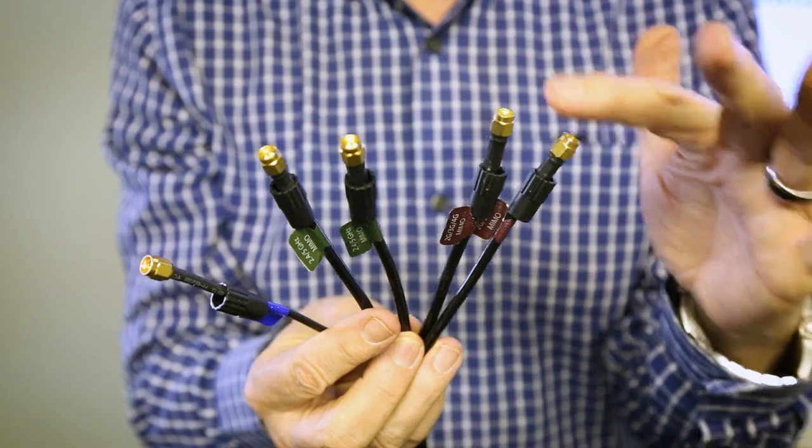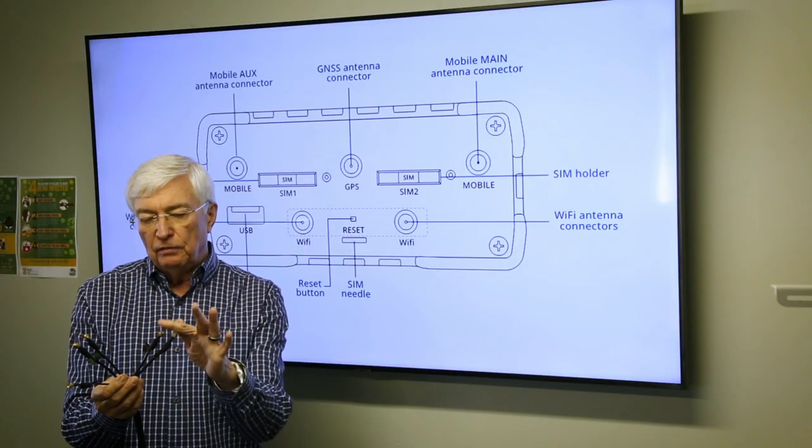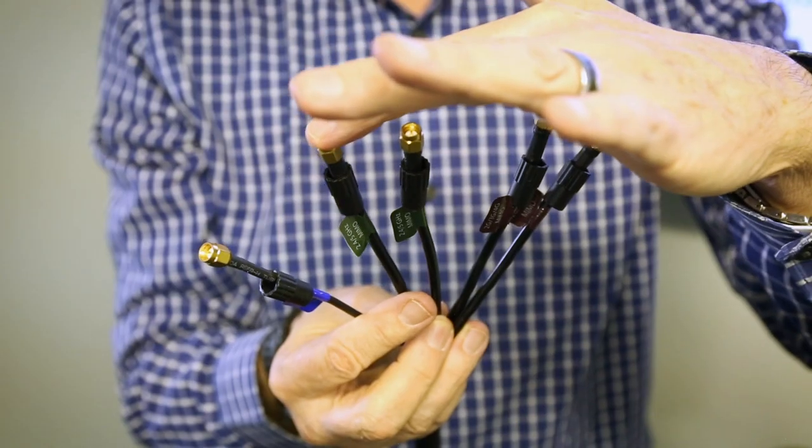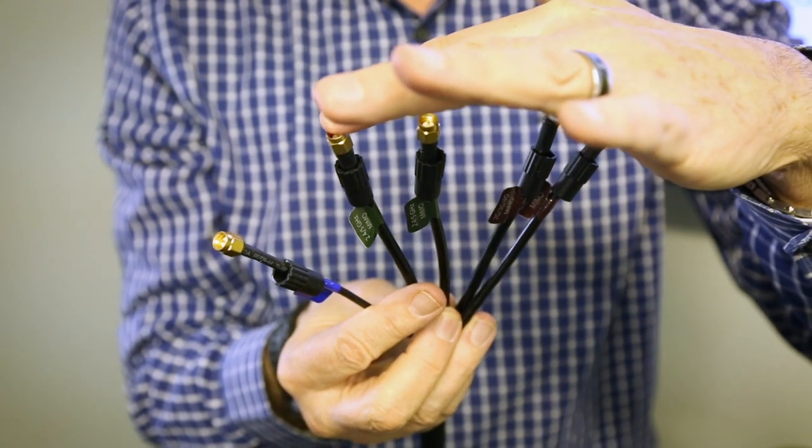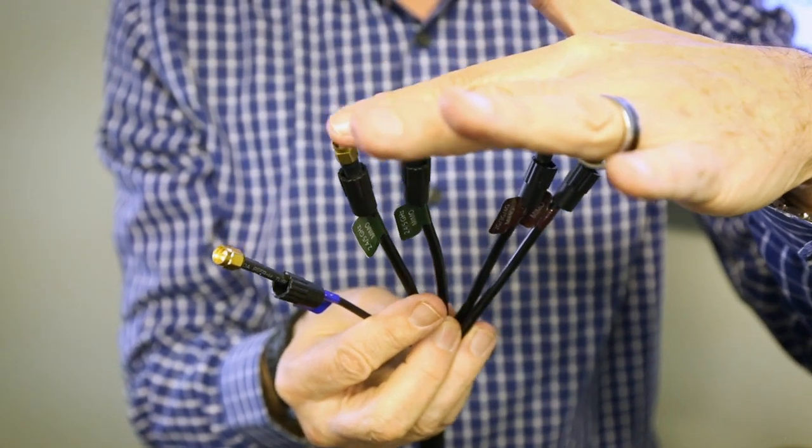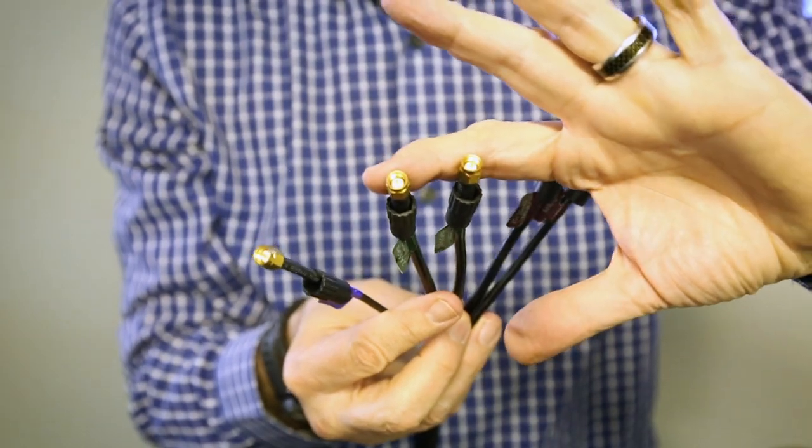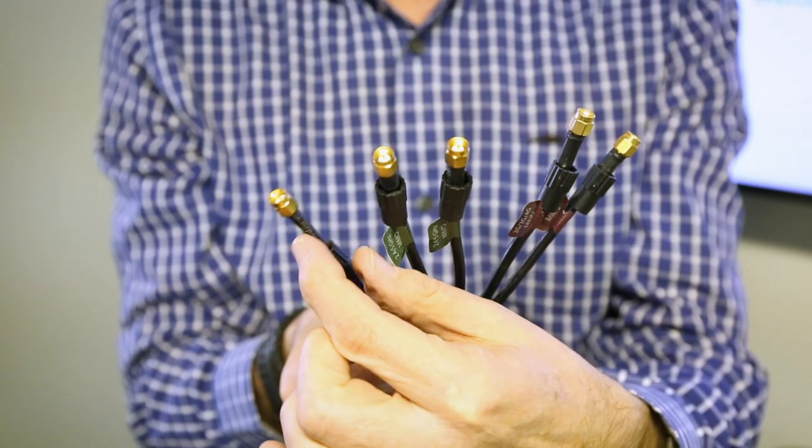The two connectors on this side are labeled 2.4 and 5 gig. That is your Wi-Fi antennas. And then on the side here you've got one that is marked as GPS GLONASS.